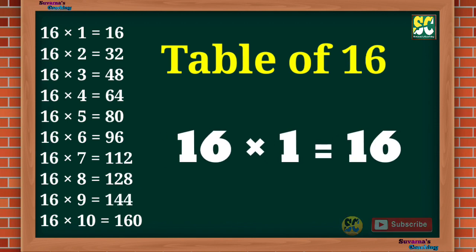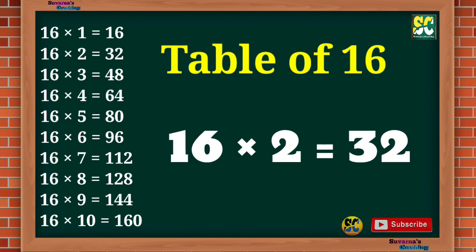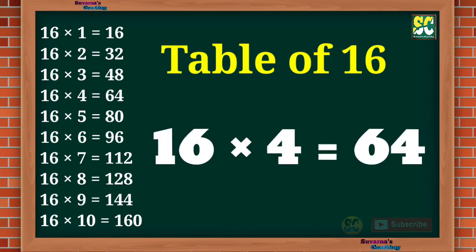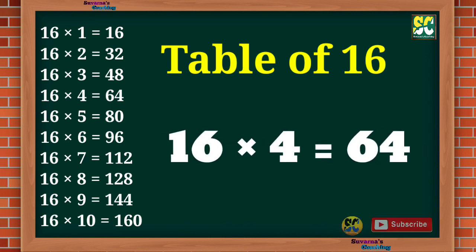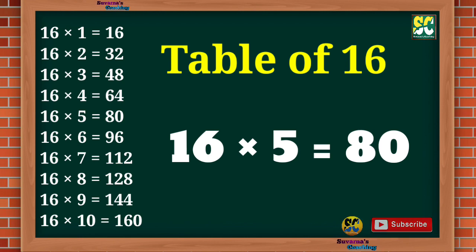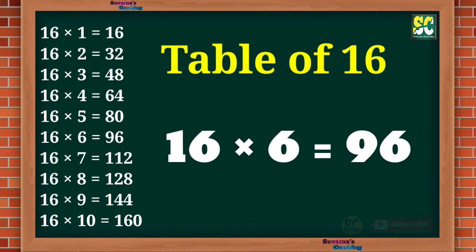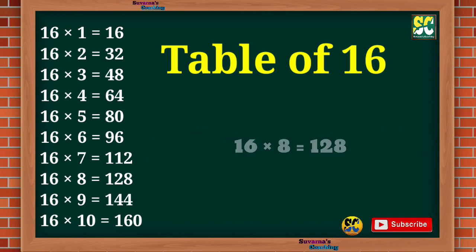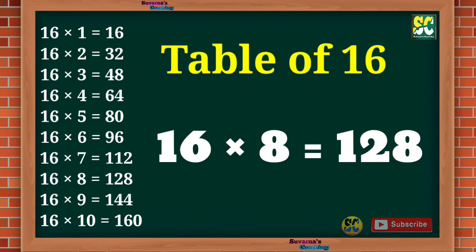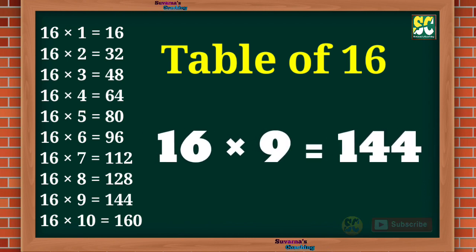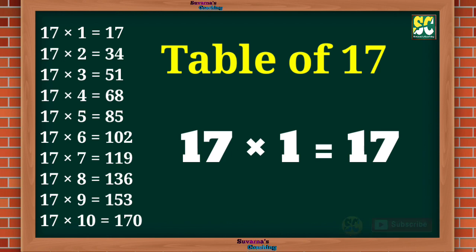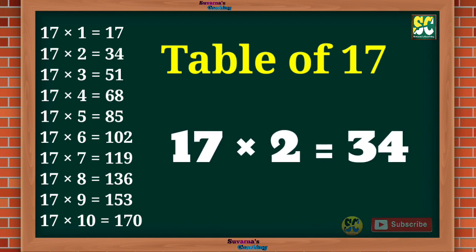Table of 16. 16 1s are 16, 16 2s are 32, 16 3s are 48, 16 4s are 64, 16 5s are 80, 16 6s are 96, 16 7s are 112, 16 8s are 128, 16 9s are 144, 16 10s are 160.